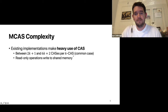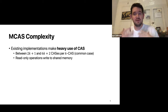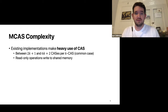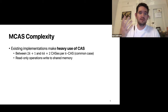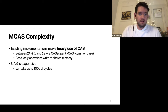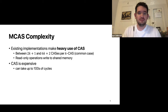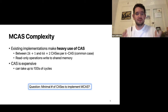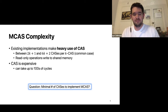The complexity can grow even higher with contention due to restarts or helping. Another characteristic of existing implementations is that those with lower complexity often require read-only operations to write to shared memory, which has been shown to limit scalability. Since each CAS instruction is expensive and can take up to hundreds of cycles, the natural question is: what is the minimal number of CAS instructions required to implement MCAS? This is the question we address through a number of contributions.